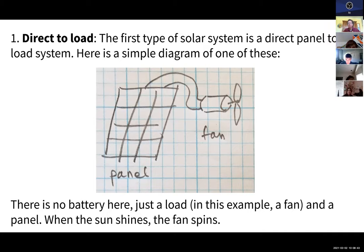The first type is a direct to load system. We have a solar panel and a load—in this case, I have a little drawing with a fan. When the sun hits the panel, the fan turns. When the sun stops hitting the panel, the fan stops turning. That's as basic a system as you can get. There's no battery; it's a very simple system.